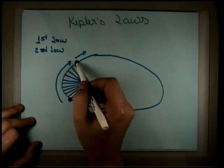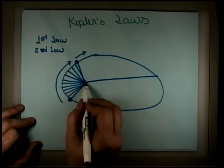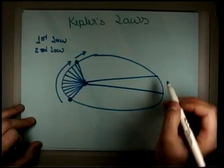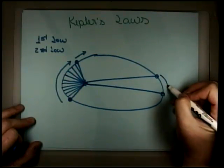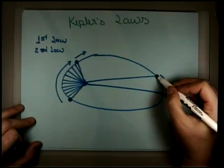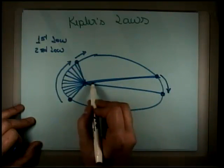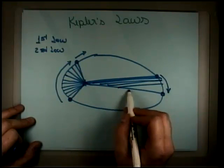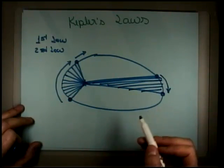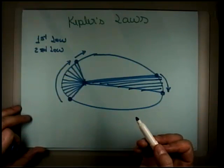And that area is constant. So if it takes two months to go from here to here, there is another place in this orbit that it will also take two months to go to, from there to there, because the area here is the same.